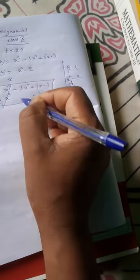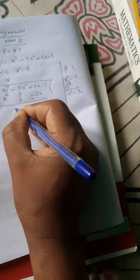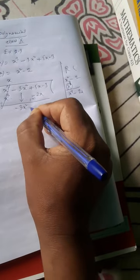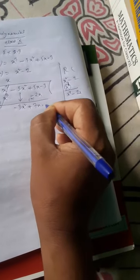This minus 3x square directly comes. 3x square and this is 7x minus 3. Now again, x square minus 2, what you have to multiply with this to get minus 3x square?